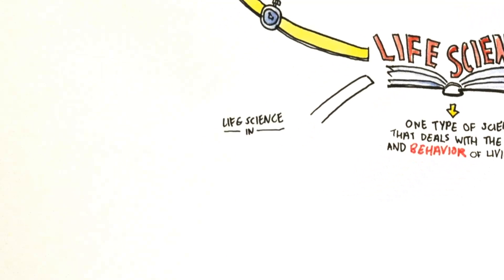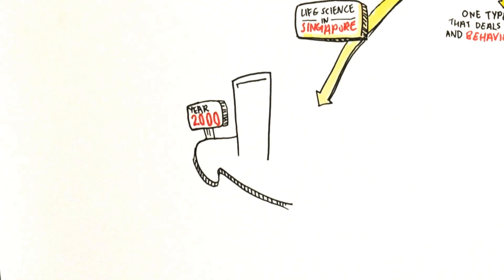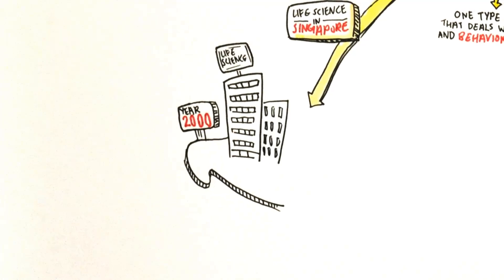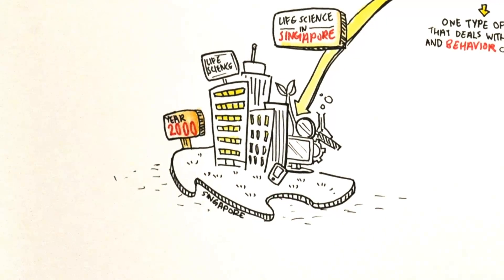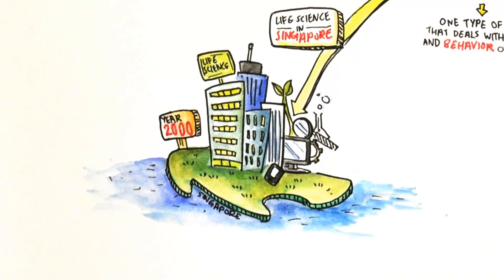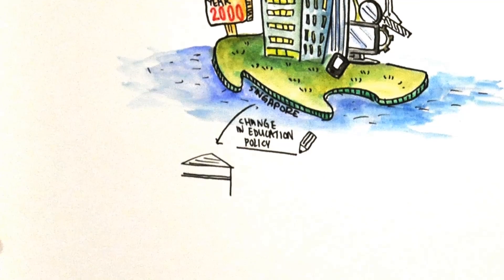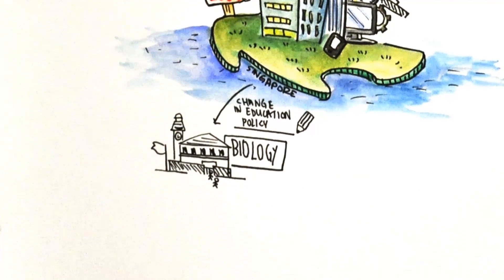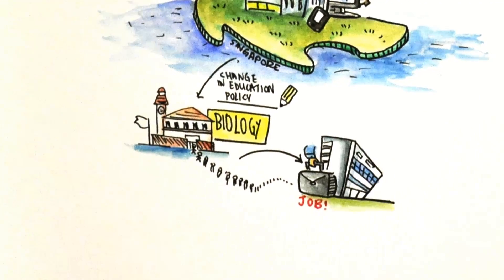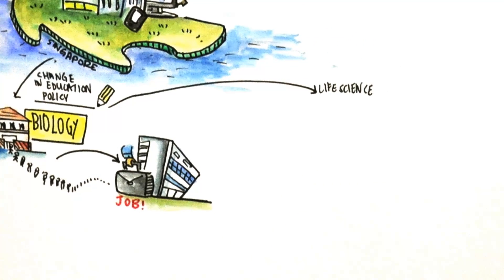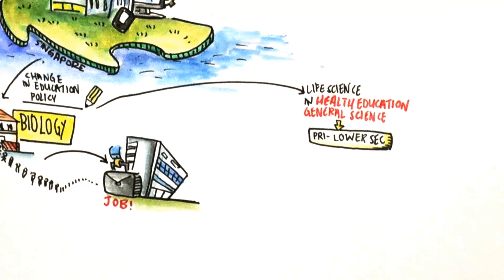Singapore came pretty late in the game of life sciences research and development. In the year 2000, there was a push by the Singapore government to make the life sciences industry an important part of the industrial landscape, alongside the electronics, chemicals and engineering industries. The life science thrust started with a change in education policy. Biology in school became the science to study that would open up doors and possibly land you an exciting job. All students were exposed to life sciences in the health education and general science syllabuses in primary and lower secondary levels.